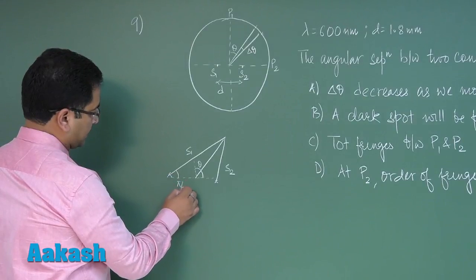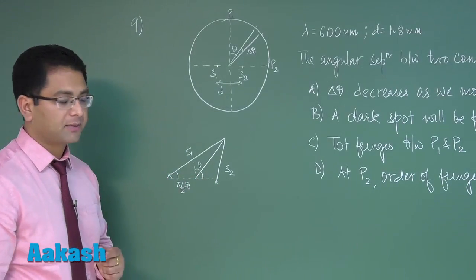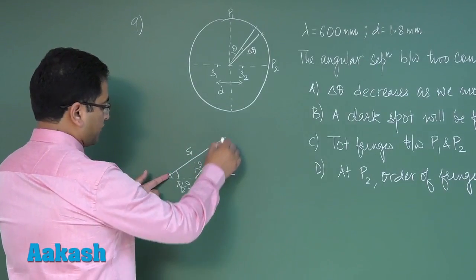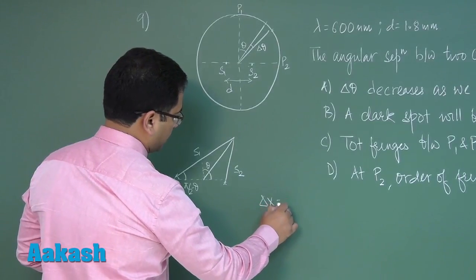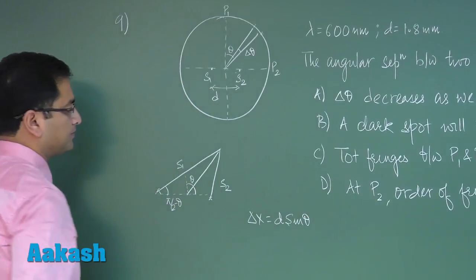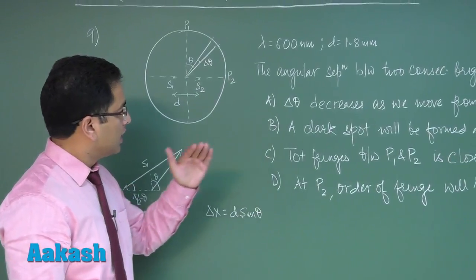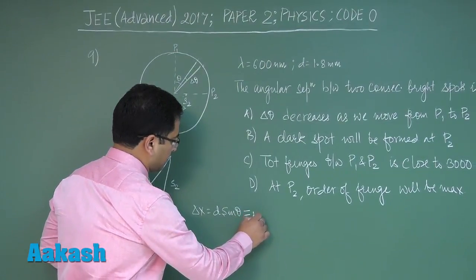Because the sources are very closely spaced, by the time this wave reaches here and this wave reaches here, the path difference between them would be d cos(pi by 2 minus Theta) which is d sine Theta. For a maxima, this d sine Theta has to be equal to m times lambda.